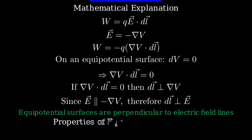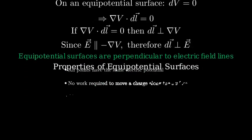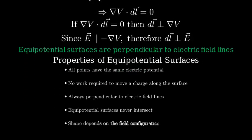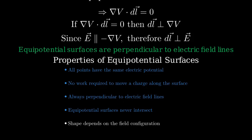Let's summarize the key properties of equipotential surfaces. First, all points on an equipotential surface have the same electric potential. Second, no work is required to move a charge along an equipotential surface. Third, equipotential surfaces are always perpendicular to electric field lines. Fourth, equipotential surfaces can never intersect each other.